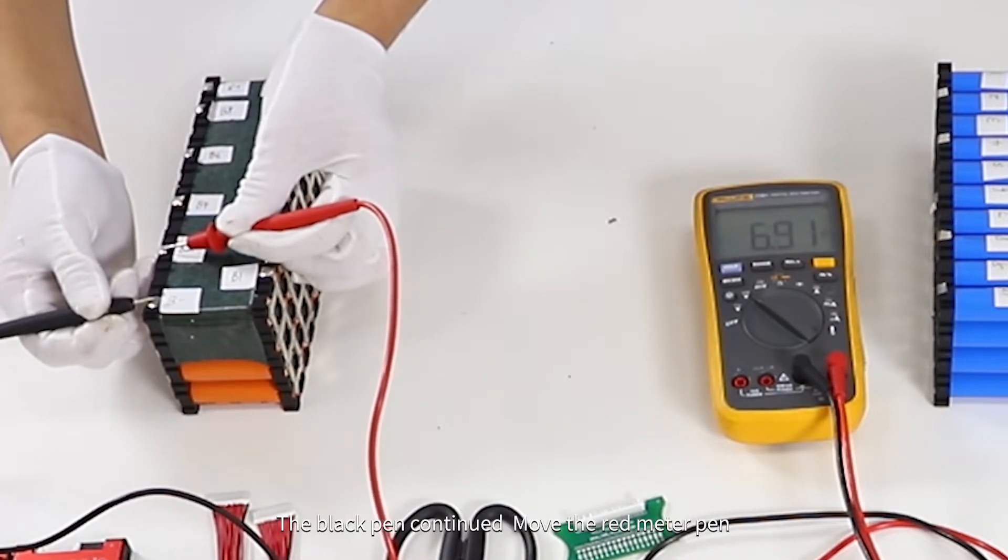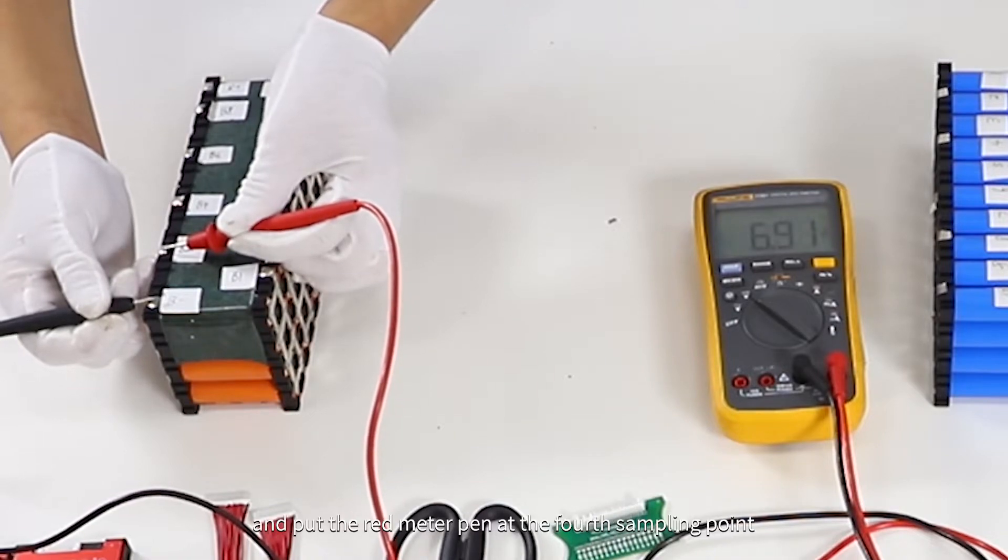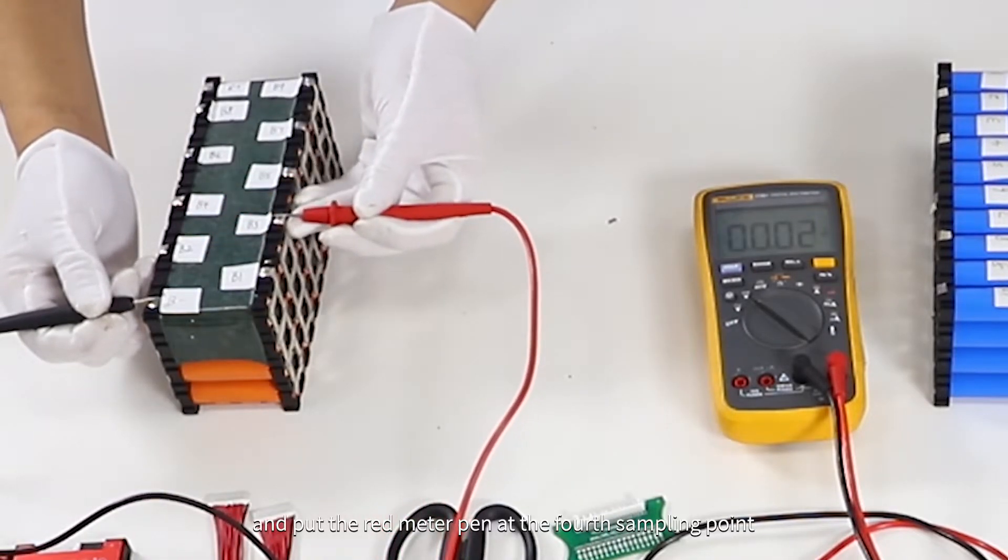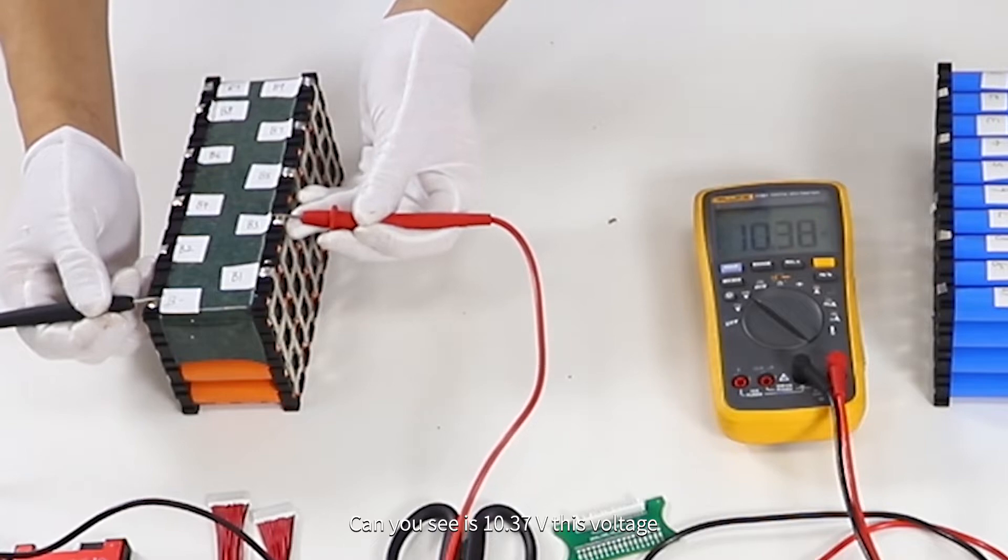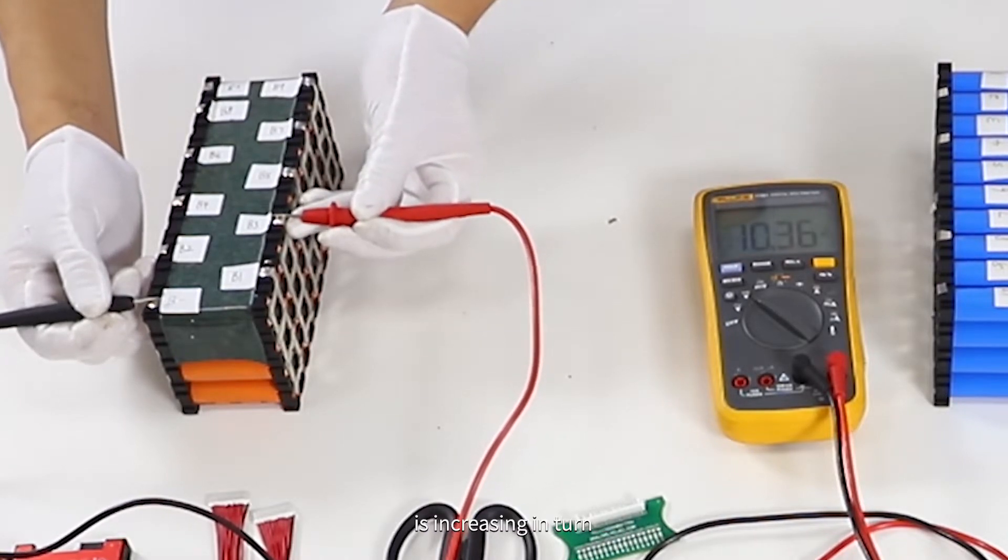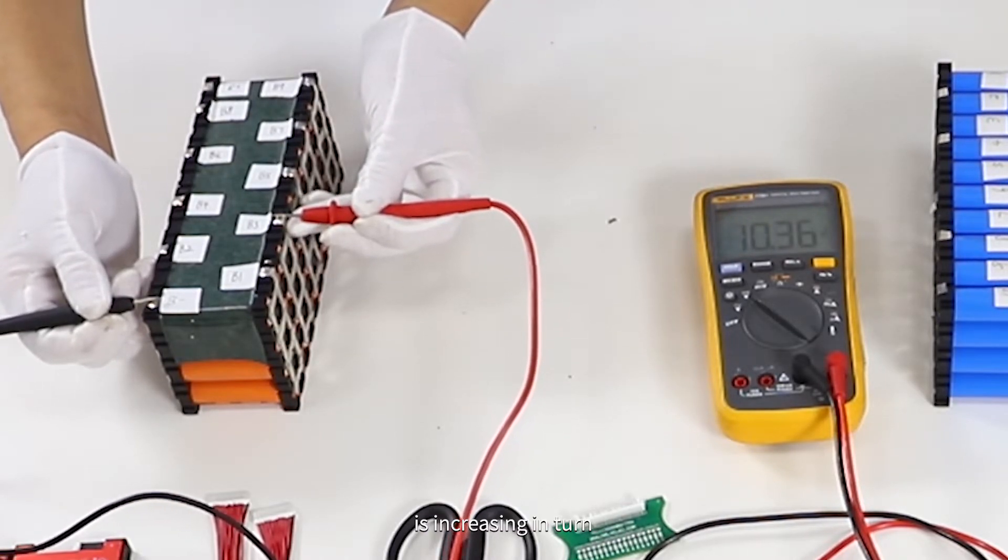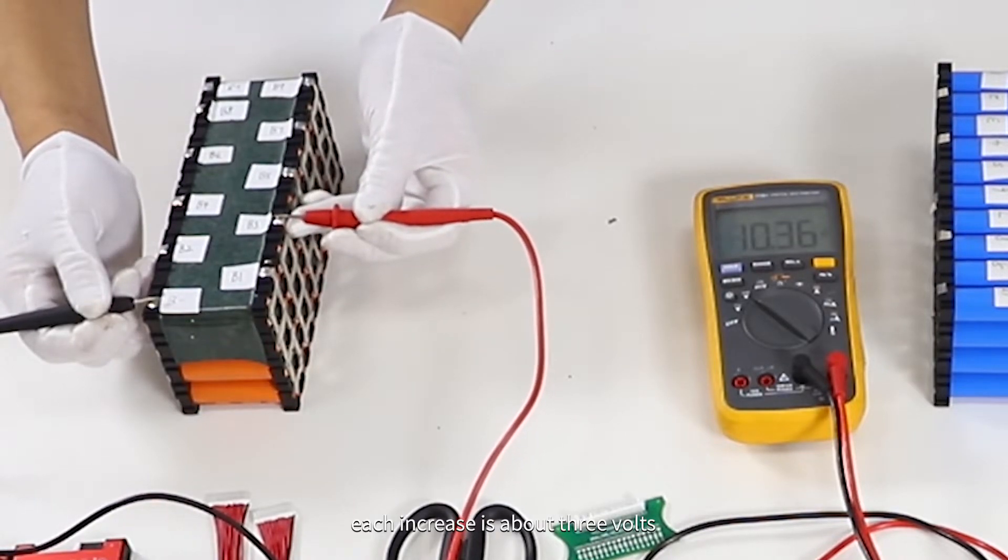The black pen continued. Move the red meter pen and put it at the fourth sampling point. Can you see it's 91.37V. This voltage is increasing in turn, each increase is about 3 volts.